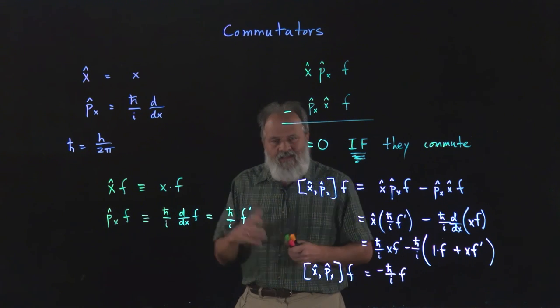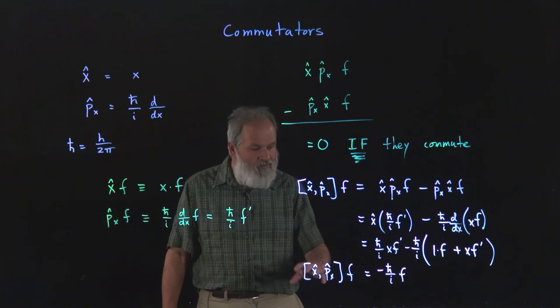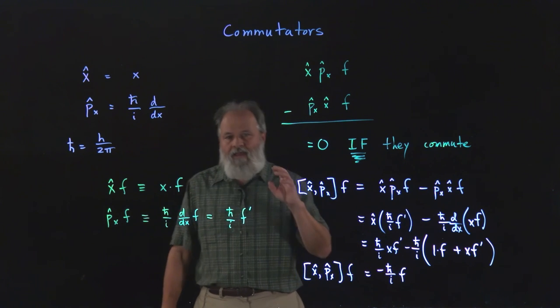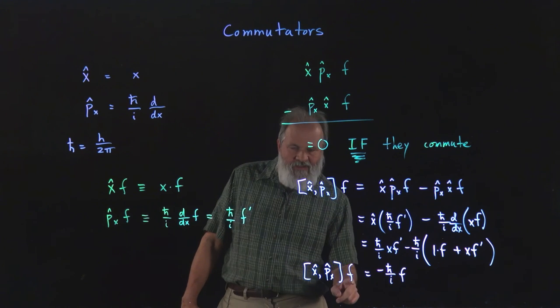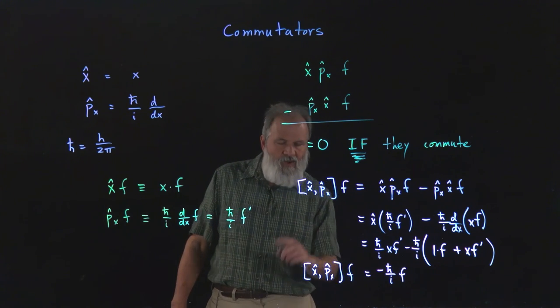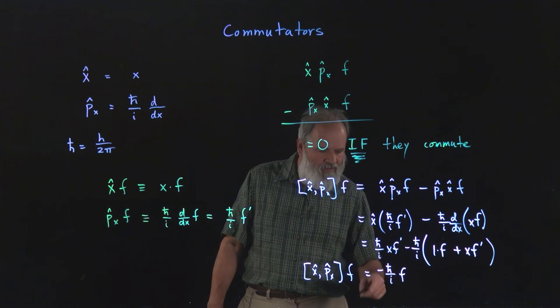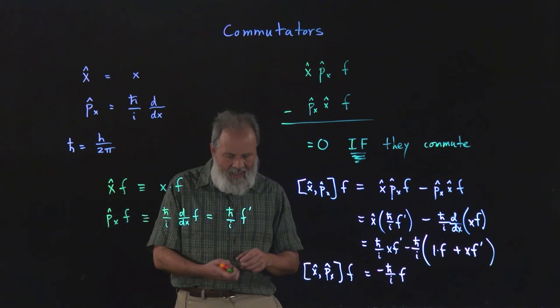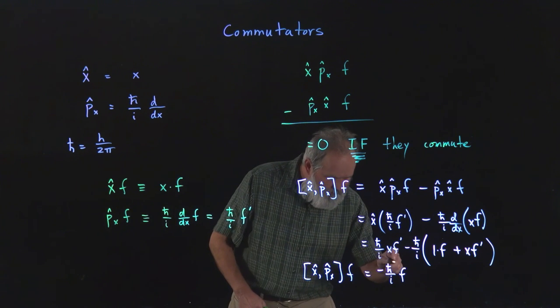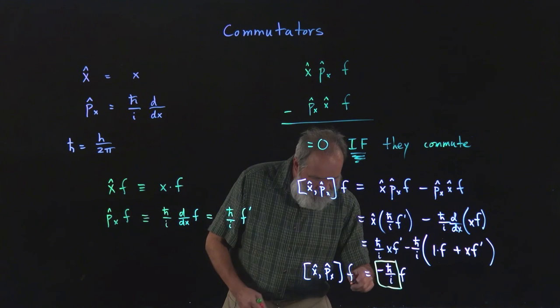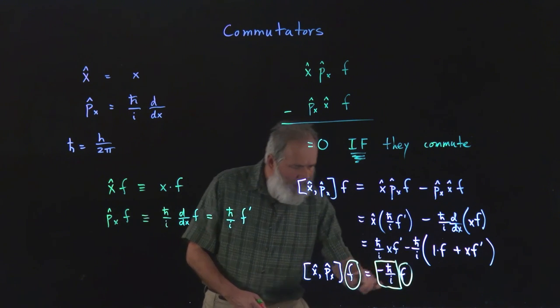This is actually a special example of, first of all, two operators that don't commute because it's not zero. And also an eigenfunction, because the function before you apply the operator and after you apply the operator you have a constant times the function. So the constant part is called the eigenvalue. This is the eigenvalue, and I'm going to circle this guy. This is the eigenfunction.